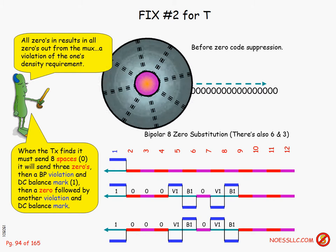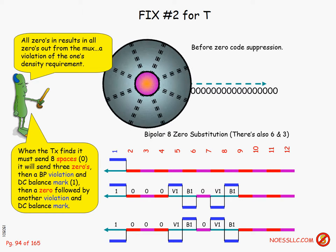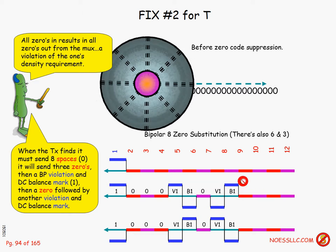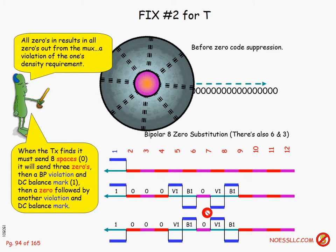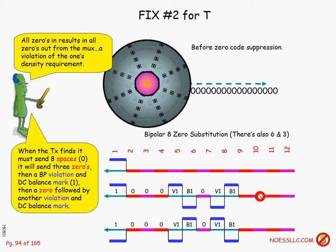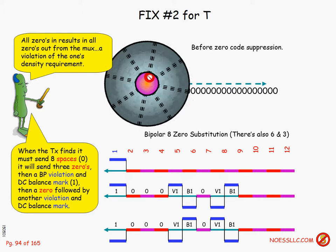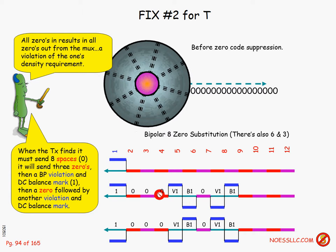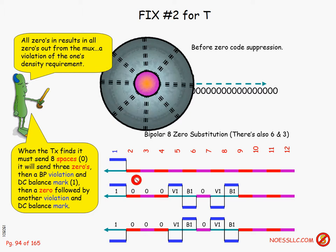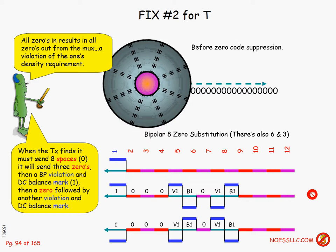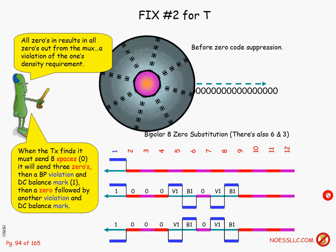B8ZS was designed because we wanted customers to have the entire 64 kilobits of their individual channel. This becomes very important for unchannelized systems, which could be carrying HDLC frames, Ethernet frames, and all kinds of data with really long strings of zeros. At the receiving end, the receiver understands B8ZS, strips all the substitution patterns off, and hands all zeros back to the device on the back side of the receiver.